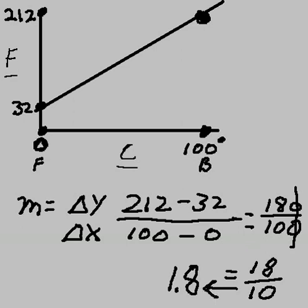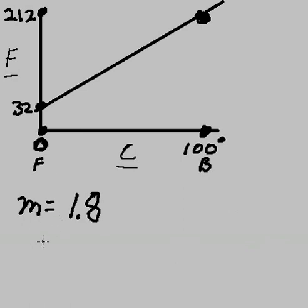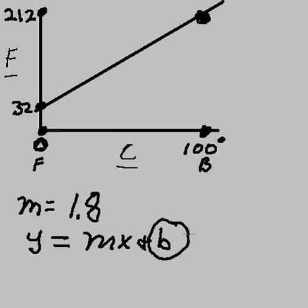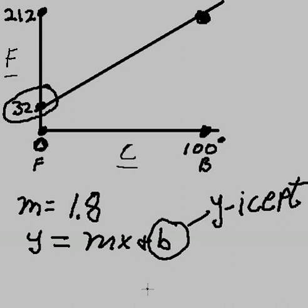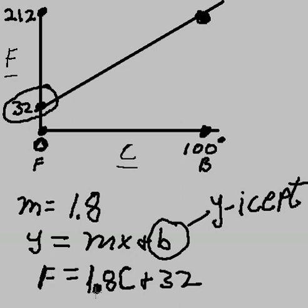Now, what else do we know? Well, we know that the formula for an equation, a straight line equation like this linear equation, is y equals mx plus b. B is the y-intercept. And the y-intercept is over here, 32. So I know that's a plus 32. What else do I know? That the slope we just calculated was 1.8. And we don't have x, we have C. And we don't have y, we have F. Fahrenheit is equal to 1.8 times Celsius plus 32.